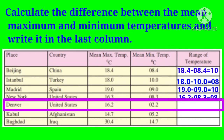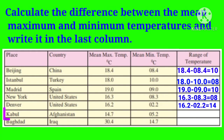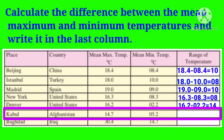The fifth place is Denver, also from the United States. Mean maximum temperature is 16.2 degrees Celsius and mean minimum temperature is 2.2 degrees Celsius, giving a range of 14 degrees Celsius. The sixth place is Kabul, Afghanistan. Mean maximum temperature is 14.7 degrees Celsius and mean minimum temperature is 5.3 degrees Celsius.